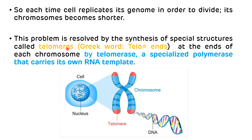Telomere is the term derived from a Greek word — in Greek, 'telos' means ends, as it is located at the end of chromosomes. These telomeres are synthesized by one specialized polymerase which carries its own RNA template, known as telomerase. Telomerase also has reverse transcriptase activity, meaning it is also called an RNA-dependent DNA polymerase enzyme, as it can synthesize DNA from an RNA template.